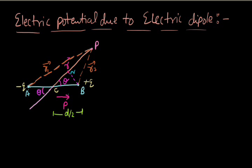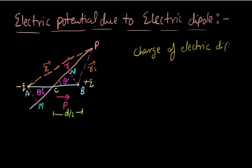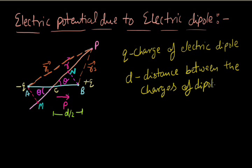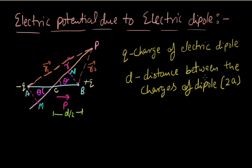We put another perpendicular from point A to the same extended line of the R vector, naming this point M. The data given is the charge of the electric dipole Q, and the distance between the charges is D, also denoted as 2A. We have to find the electric potential due to this dipole at point P, which is at r distance from the center of the dipole.